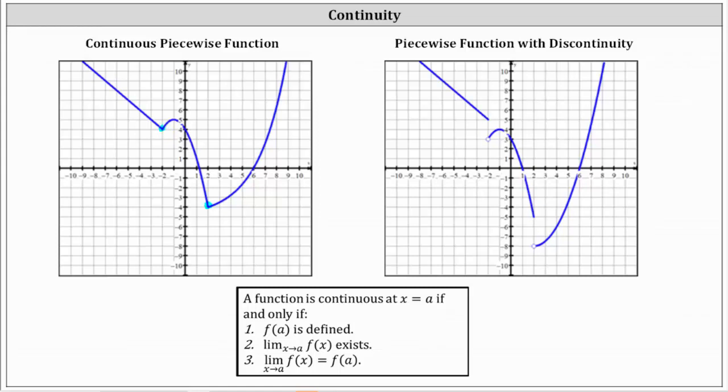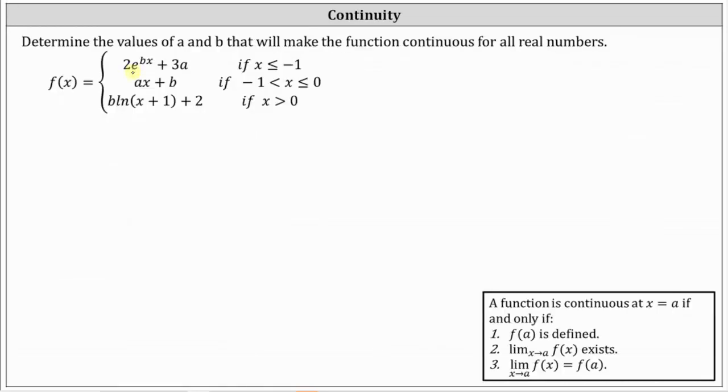So going back to our example, this indicates that two times e to the power of bx plus three a must equal ax plus b at x equals negative one, and ax plus b must equal b times natural log of the quantity x plus one plus two at x equals zero in order for the piecewise function to be continuous.